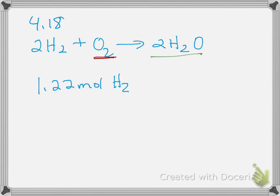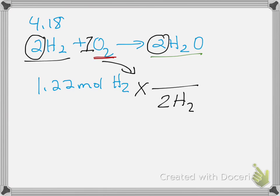So in order to do this, we need to use the coefficients in the balanced reaction, that's these numbers here. When there isn't a number, we know that actually means it's a 1. So to go from H2 to O2, I want to cancel H2, so I'm going to put 2H2 on the bottom and 1O2 on the top.